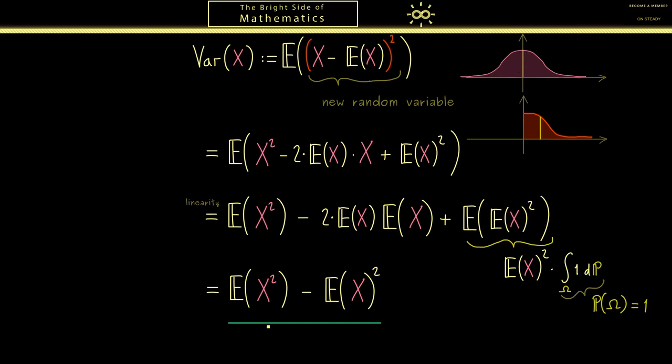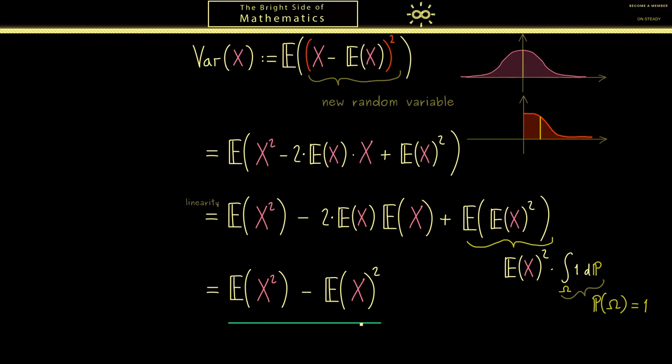This is not hard to remember: it's the expectation with the square inside minus the expectation with the square outside. So if you already know E[X], to calculate the variance you just need to calculate E[X²]. The assumption required is that this expectation exists — meaning the abstract integral of X² exists.